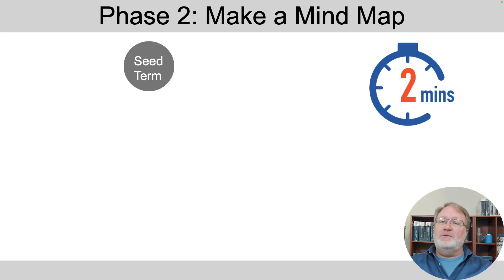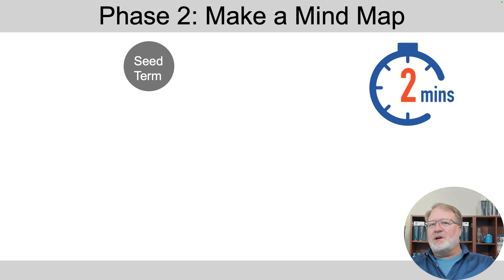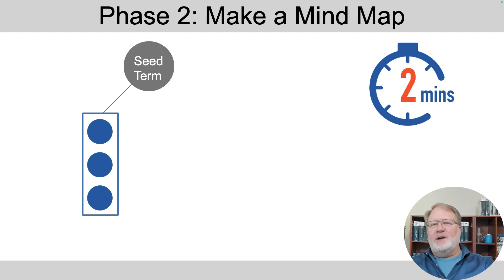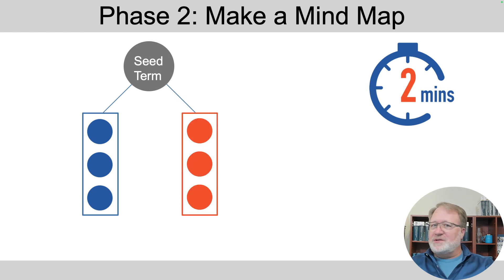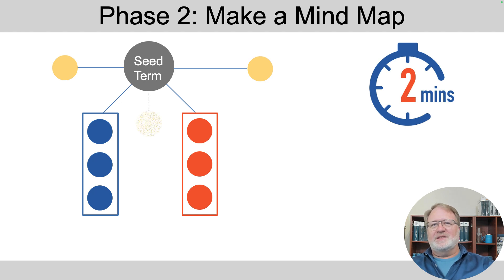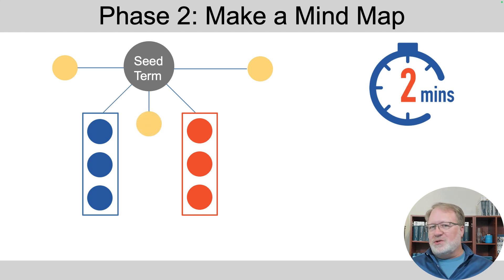Next up at phase two, make a mind map from the terms and concepts you just wrote down. So you start with the seed term, put it somewhere near the middle of your piece of paper, and then whatever terms go together, group them in some way. For terms that don't really group together well, list those individually around the page. List things that are closely related nearby and not so closely related further away — that's the idea.